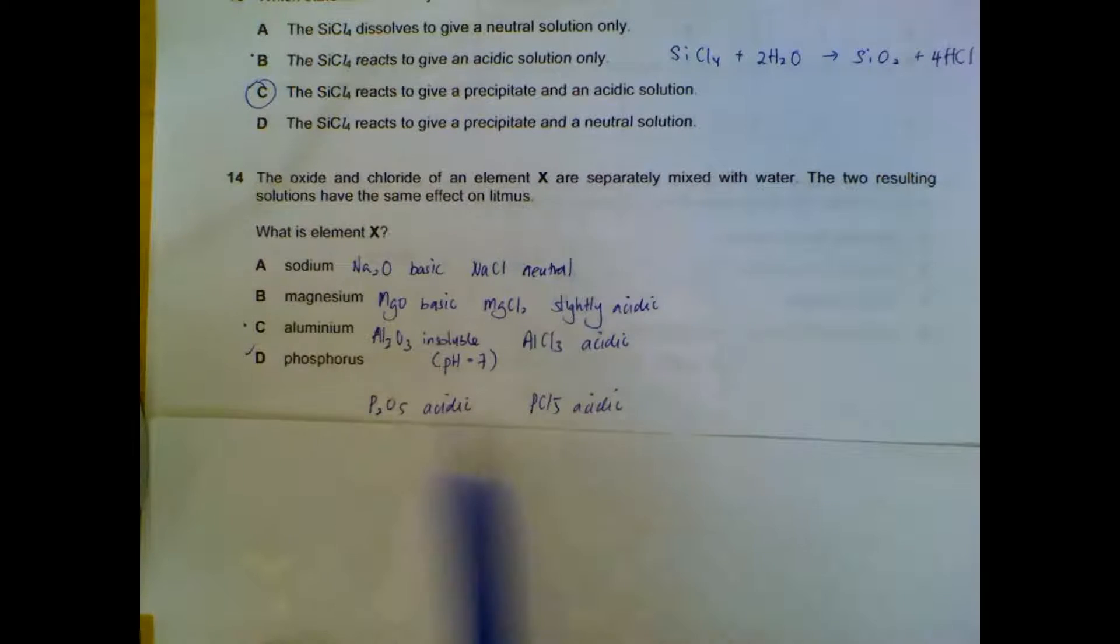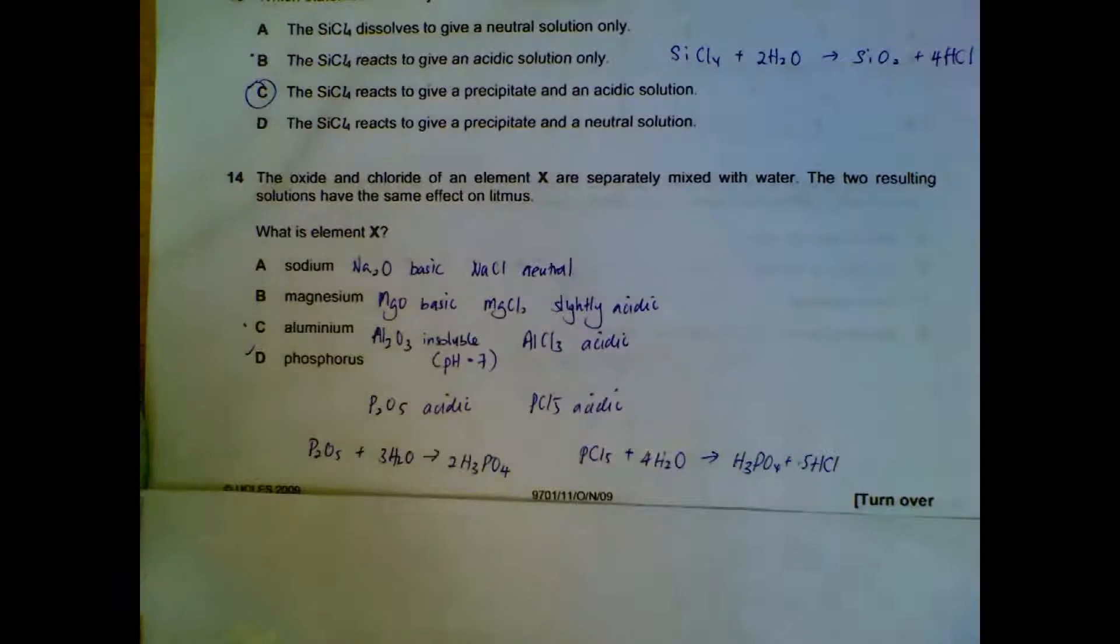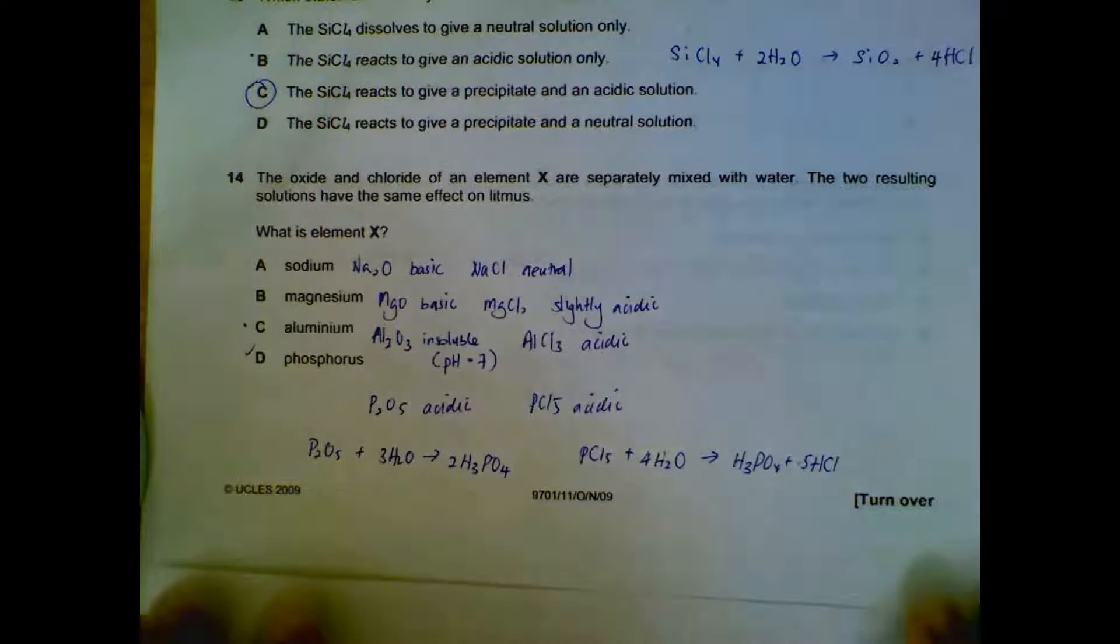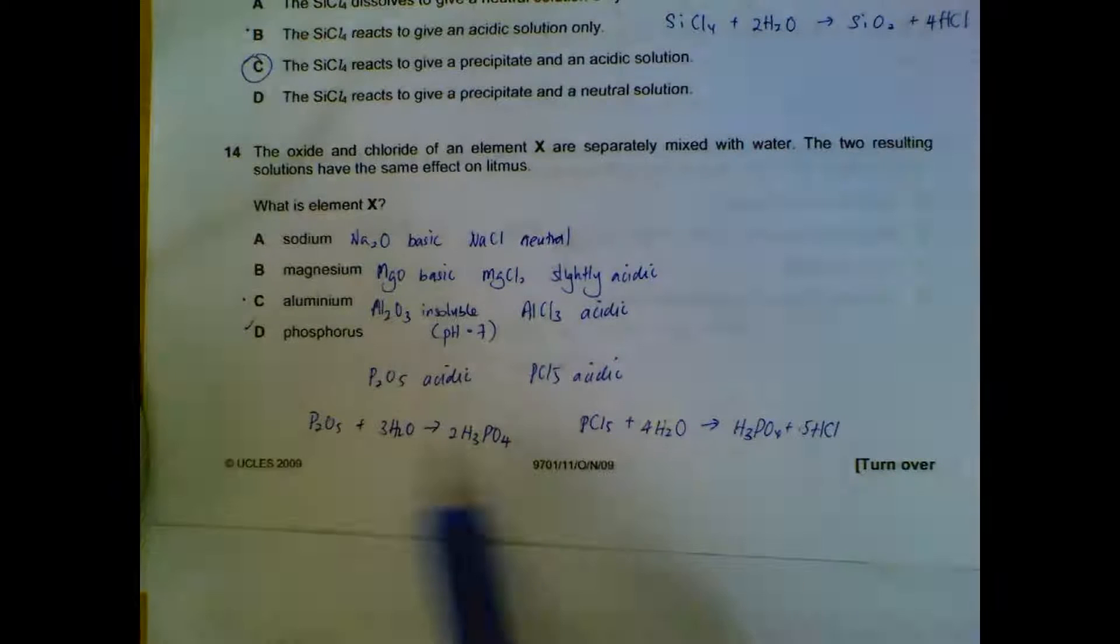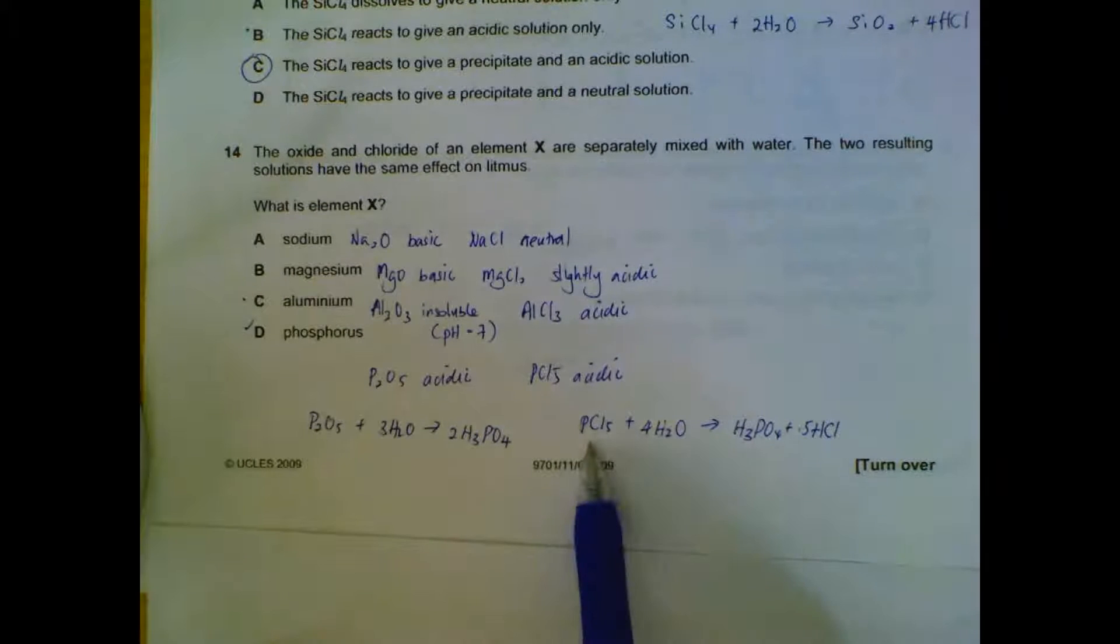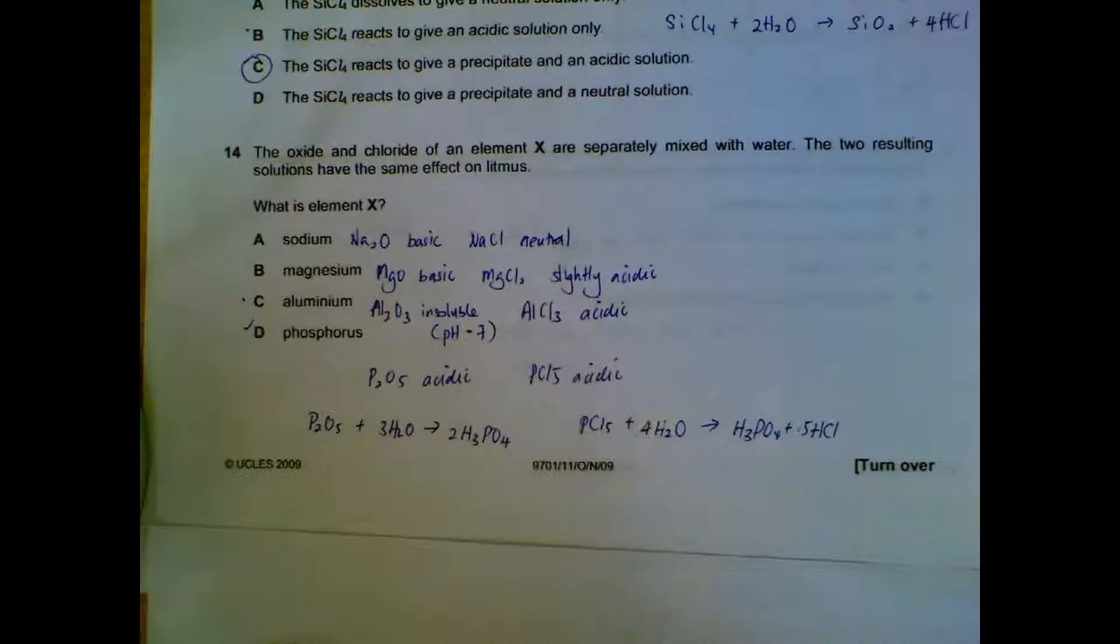Aluminum oxide is insoluble, so your pH will be 7. Aluminum chloride is acidic. Phosphorus chloride and phosphorus oxide, when dissolved in water, will cause the solution to be acidic in both cases. So we have P4O6 and PCl3, and we do get acids in both cases.